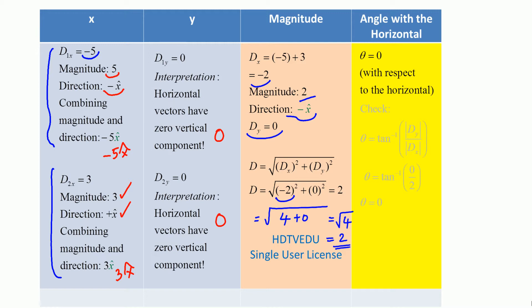You already know the direction as well — it is to the left. Now let's look at the angle. When we substitute dy and dx, we get 0. But do not forget, when we play with magnitudes you have to indicate the vector. The resultant vector is 2 units to the left, which is nothing but 180 degrees with respect to positive x.